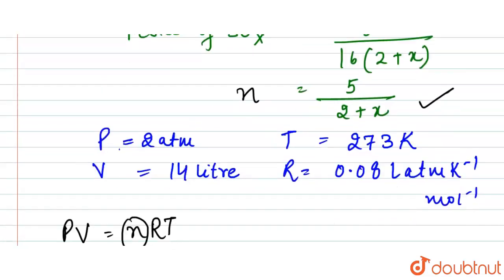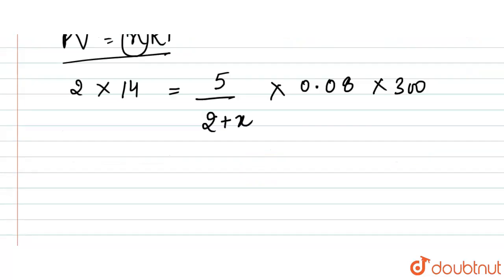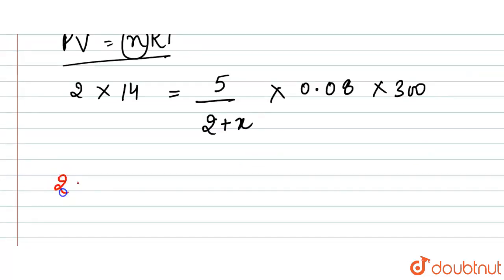The n value is 5/(2 + x) into 0.08 into 300. If we solve this, it will be 28(2 + x) equals 5 times 0.08 times 300.